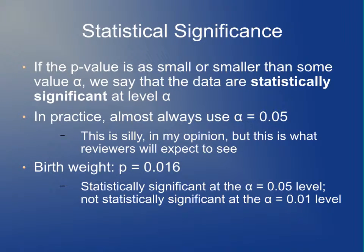If the p-value is smaller than some value alpha, we say the test is statistically significant at level alpha. In practice, you almost always use alpha equals 0.05 — if your p-value is less than 0.05, you reject your null hypothesis; otherwise you fail to reject. In my opinion, it's a decent rule of thumb, but it's become almost religious dogma among journals and reviewers. I think people get so obsessed with 0.05 that it leads to scientific problems, but that's the industry standard right now and probably what we'll use for most of this class.